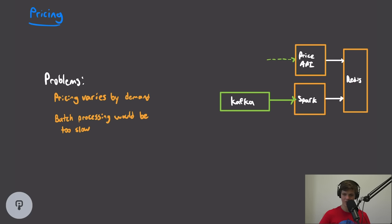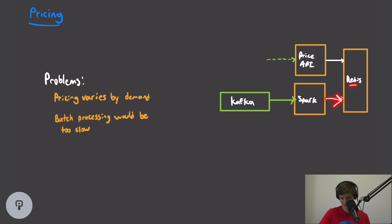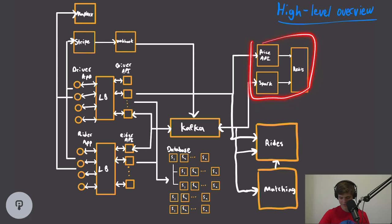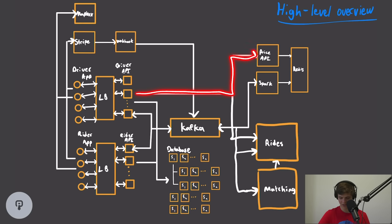Our price API needs to get information about demand, which we'll store in a Redis in-memory database for fast access. To get demand data into Redis, we're going to use Spark — a distributed data analytics engine that allows you to take a data set and perform filtering, sorting, aggregating, grouping, and joining. We'll use Spark's structured streaming feature, which subscribes to a Kafka event bus and processes events in a streaming fashion. Ride requests will be events in Kafka; Spark will subscribe, aggregate them by time and location, and push them to Redis.